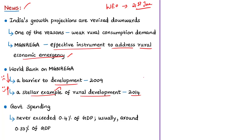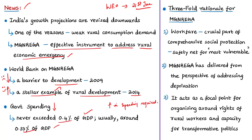Despite international recognition, the expenditure on MGNREGA by the government has never exceeded 0.4% of India's GDP — it is usually around 0.33% of GDP. The speaker calls for increased government spending on the MGNREGA program. The speaker presents a three-point rationale for MGNREGA's relevance and its ability to address the rural economic emergency.